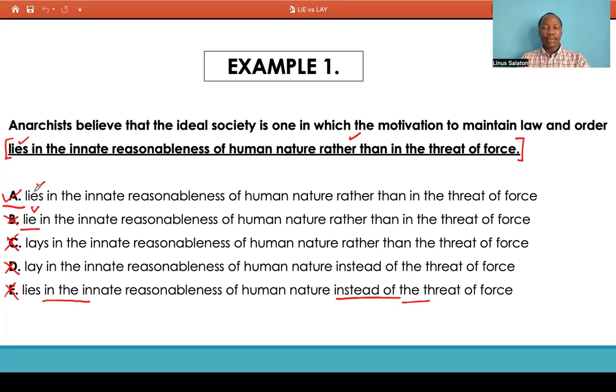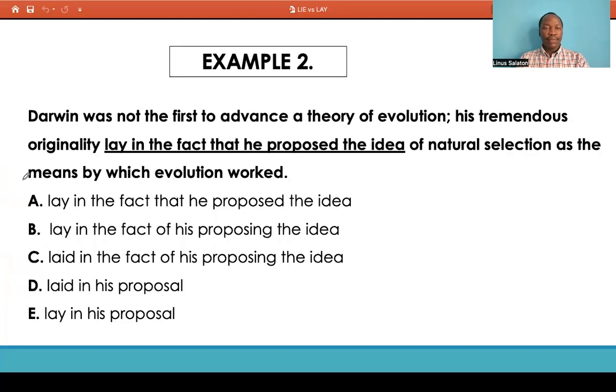Let's try another example. Example two: Darwin was not the first to advance the theory of evolution. His tremendous originality lay in the fact that he proposed the idea of natural selection as a means by which evolution worked. So we can tell the use of lay here, because this is a transitive verb, it takes a direct object because originality, as we have been told, lay in the facts that he proposed the idea. So originality in the fact, it takes a transitive verb.